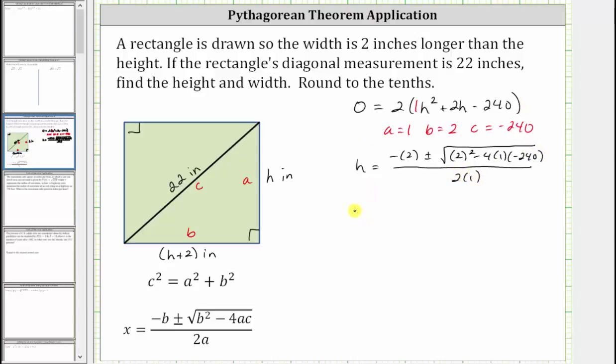Simplifying, we have h equals negative two plus or minus the square root of, this will be two squared, which is four, and then we have minus four times one times negative 240, which is minus negative 960, which is equivalent to plus 960. And all this is still divided by two. Four plus 960 is equal to 964, giving us h equals negative two plus or minus the square root of 964, all divided by two.